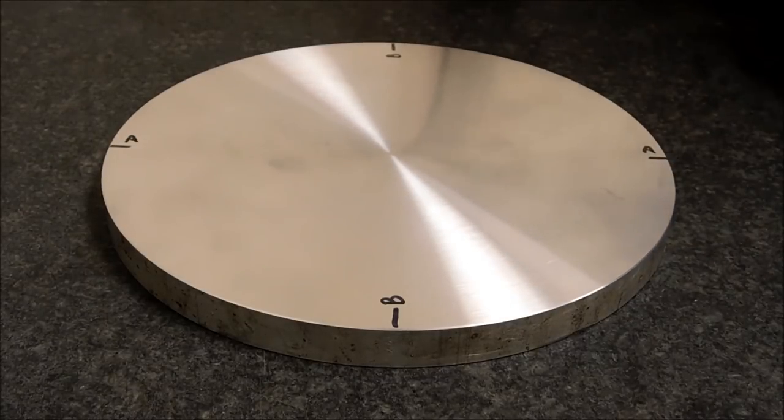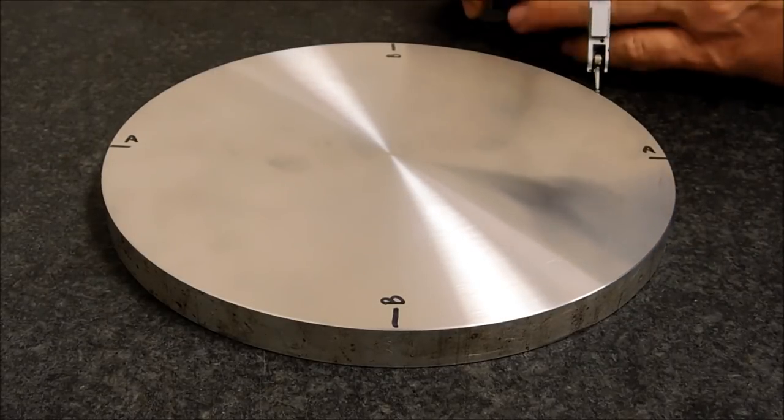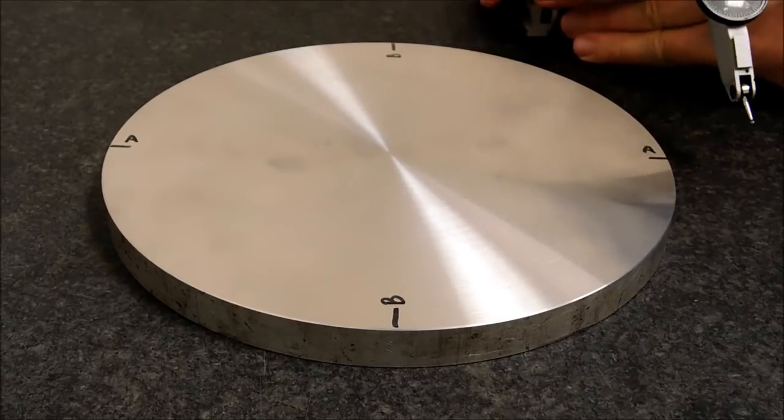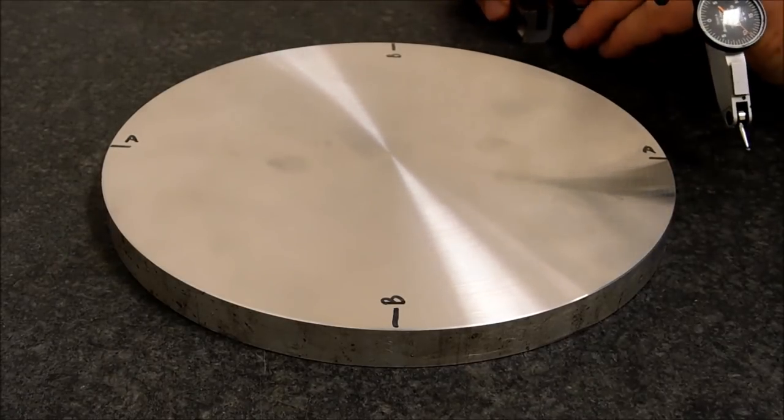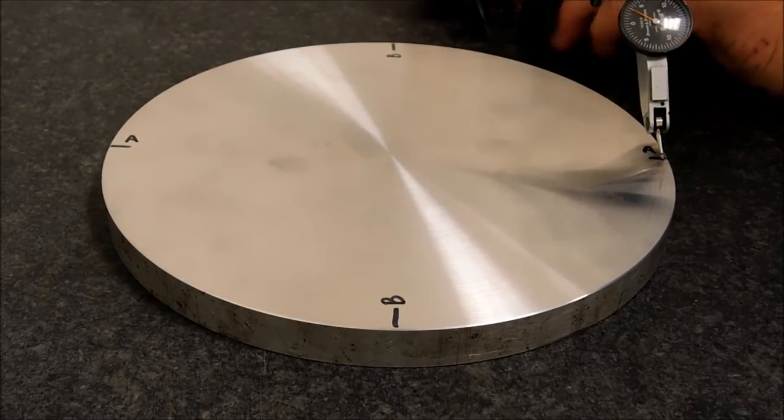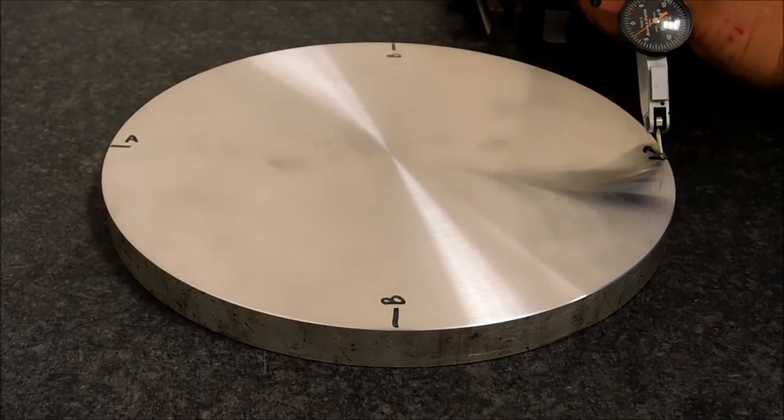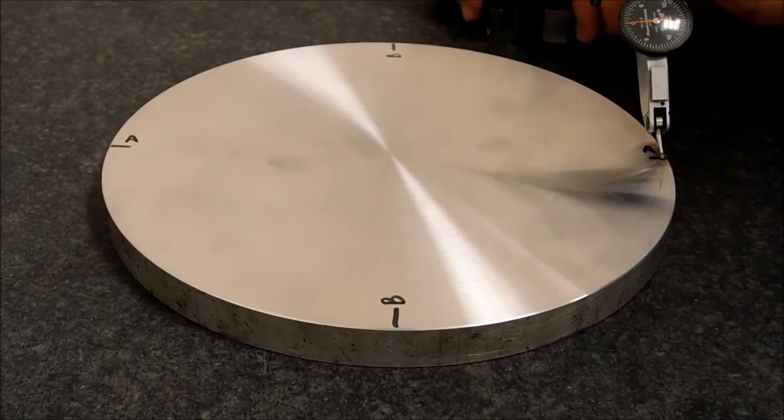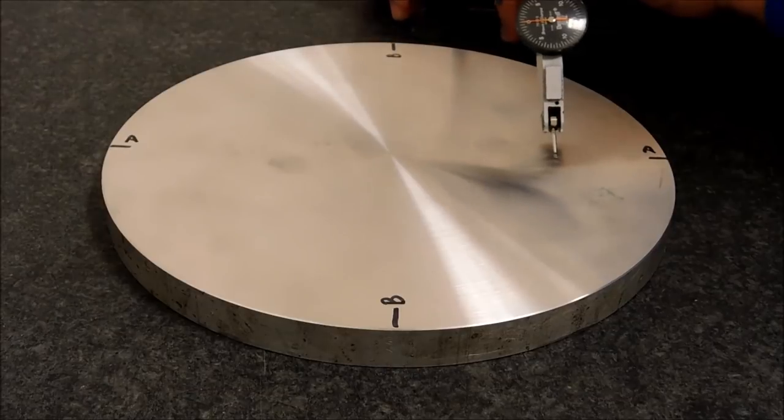So the first thing we're going to do is we're going to drag an indicator across it side to side. This is a Brown and Sharpe Best Test half-thou increment indicator. I'm going to set this up on zero or close to it. There you go and we'll just push it right across the center.